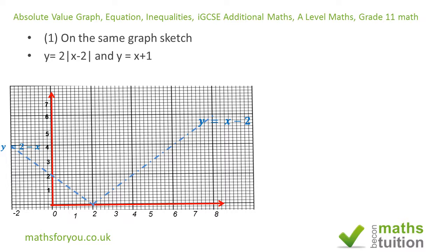Now for the complete graph of Y equals 2 times absolute value of (X minus 2), all I've done is for a given X value, take the Y value from the graph of Y equals X minus 2 and double it. That doubled Y value gives us the new Y value for 2 times absolute value of (X minus 2). Find a Y value and then double it — that's what I've got here.